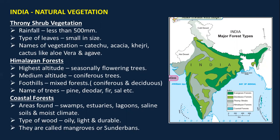Next is the Himalayan forest, which is distributed altitude-wise. At the highest altitude we have seasonally flowering trees; at medium altitude we have coniferous trees — trees with a conical shape; at the foothills we have mixed forest — a mix of coniferous and deciduous. The types of trees found in Himalayan forests are pine, deodar, fir, and sal.